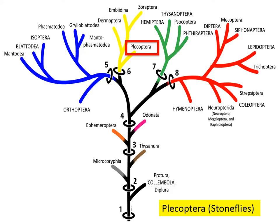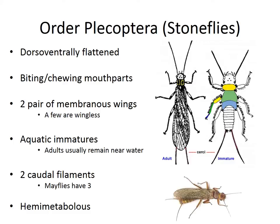The next order is Plecoptera, or stoneflies. Stoneflies are dorsoventrally flattened. They have chewing mouthparts and possess two pairs of thin membranous wings. Their immatures are aquatic, and the adults often remain near water, quite often associated with higher-quality waterways and moving bodies of water such as streams. Stoneflies possess two caudal filaments at their rear — unlike mayflies, which have three — and they also are hemimetabolous.